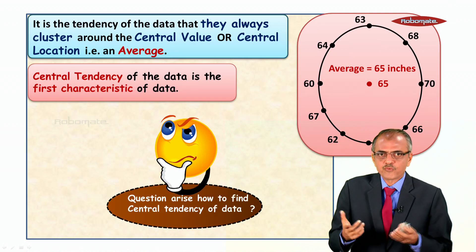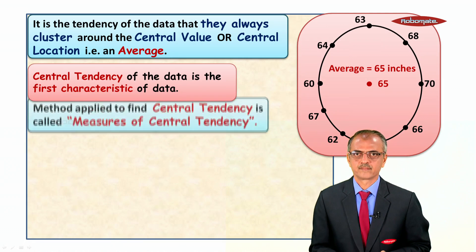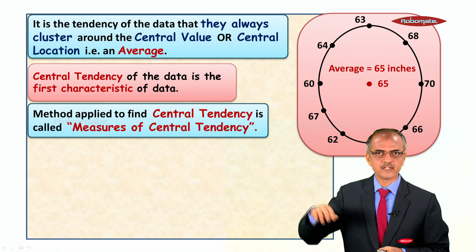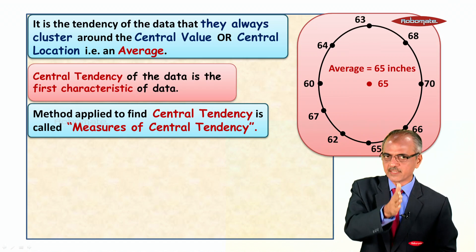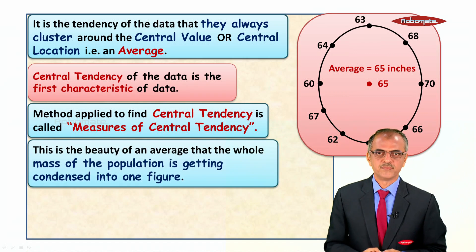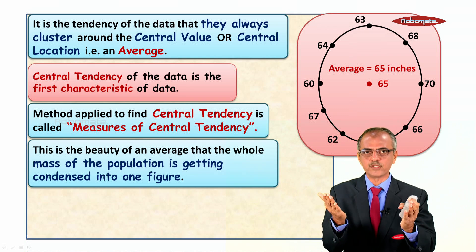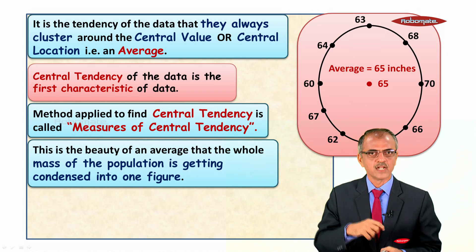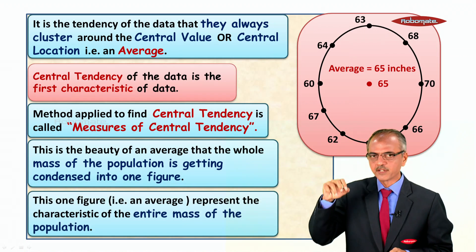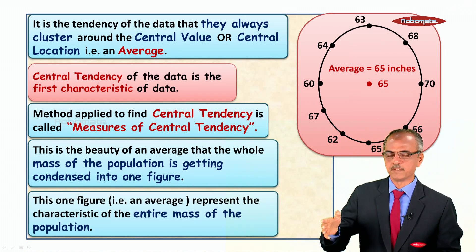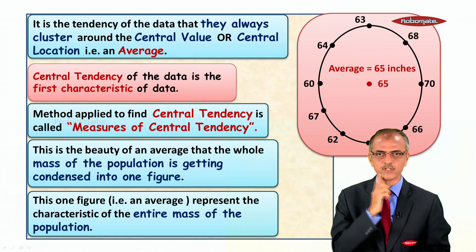Central tendency of the data is the first characteristic of the data. How do we find central tendency of data? The method applied to find the central tendency is called measures of central tendency. This is the beauty of an average: the whole mass of the population is condensed into one figure that represents the characteristic of the entire mass.